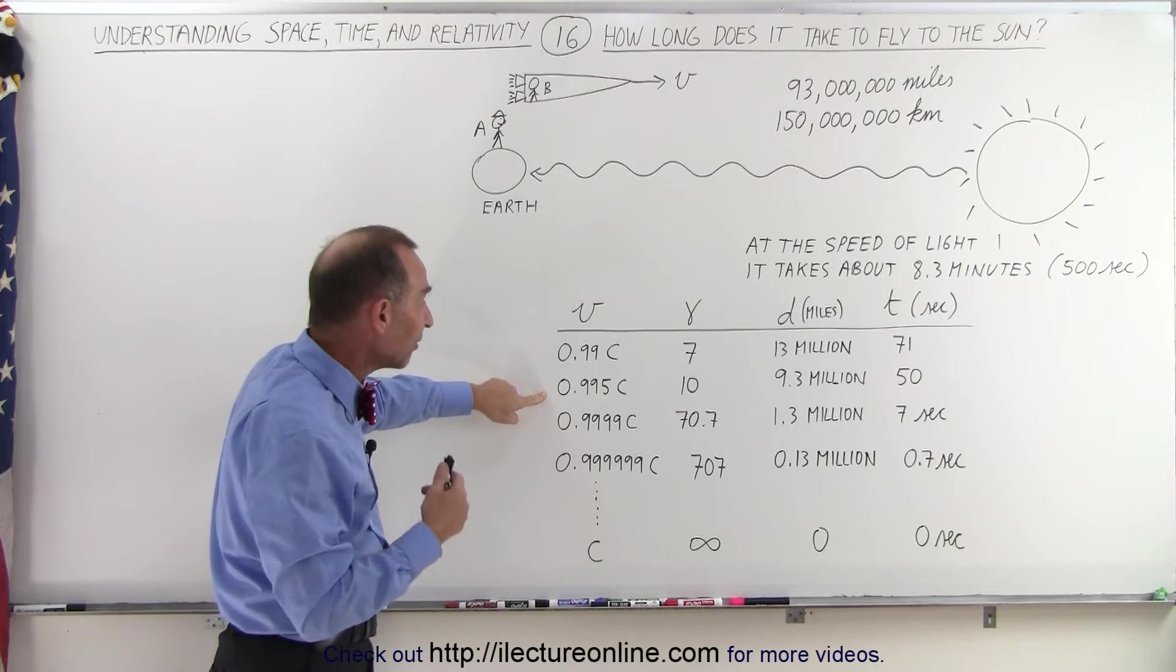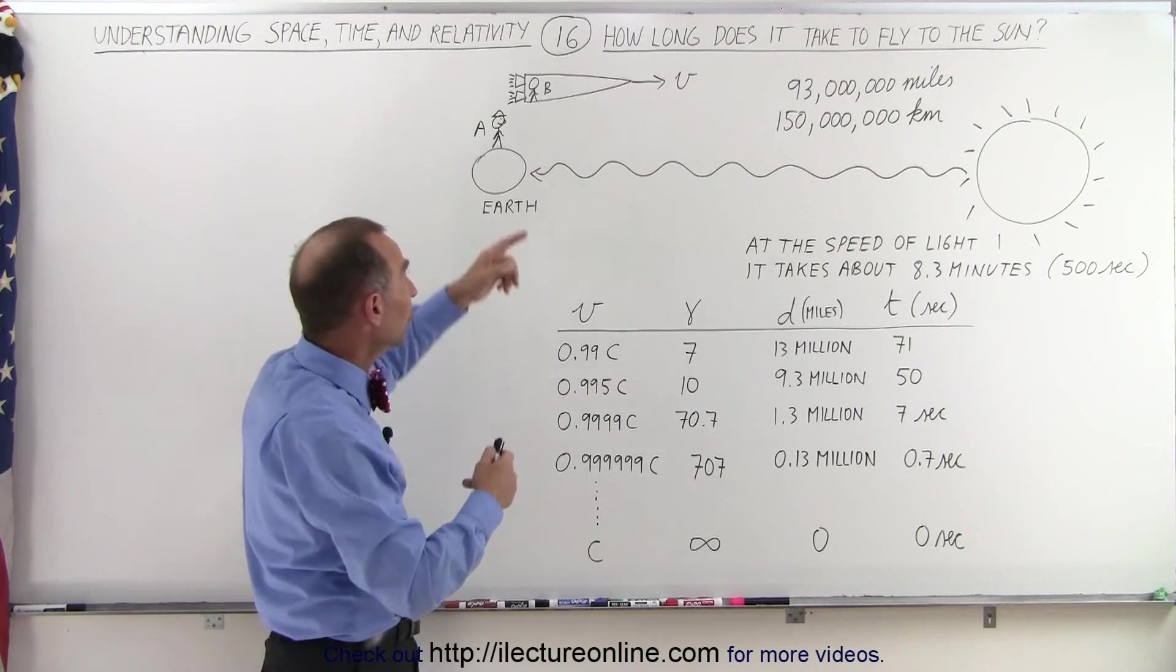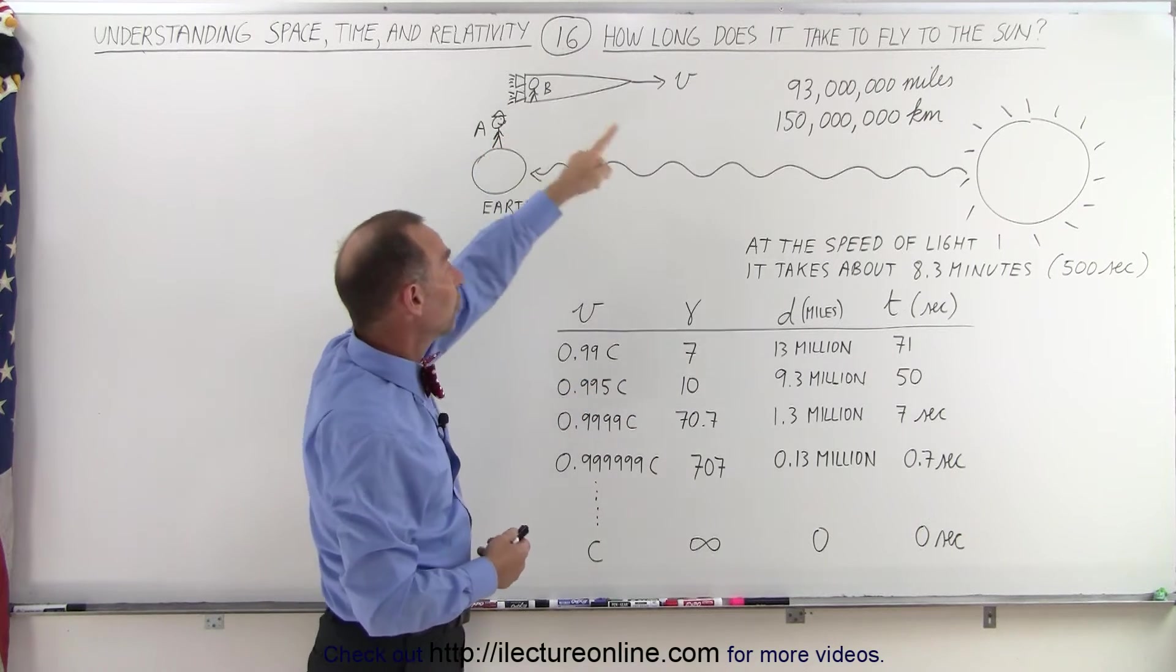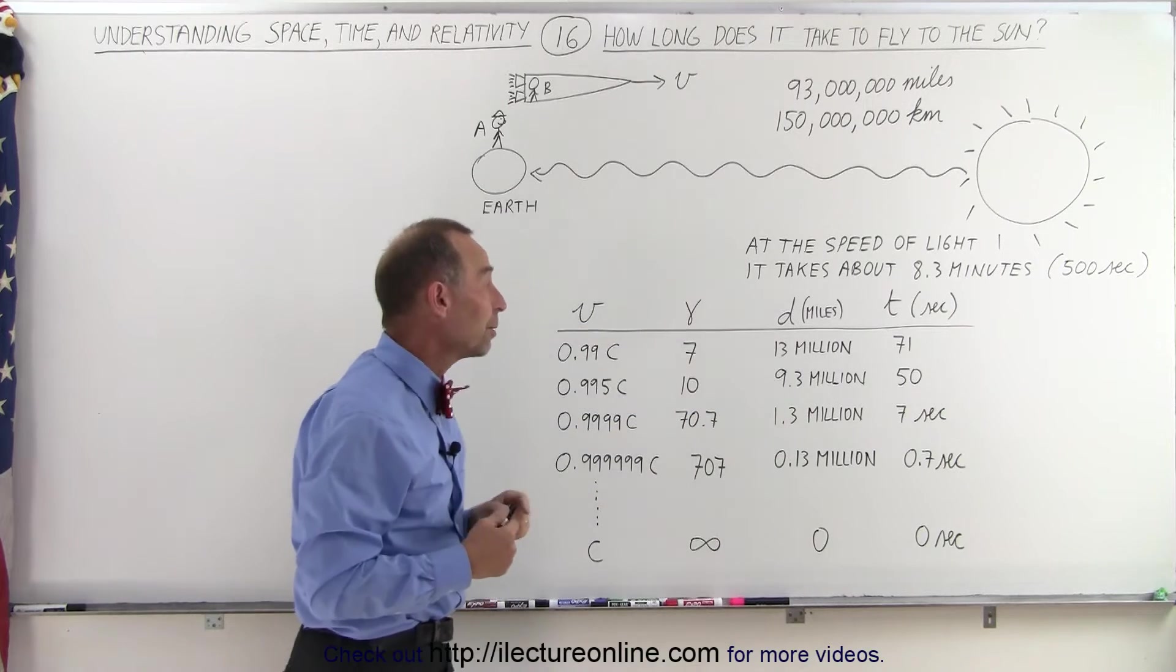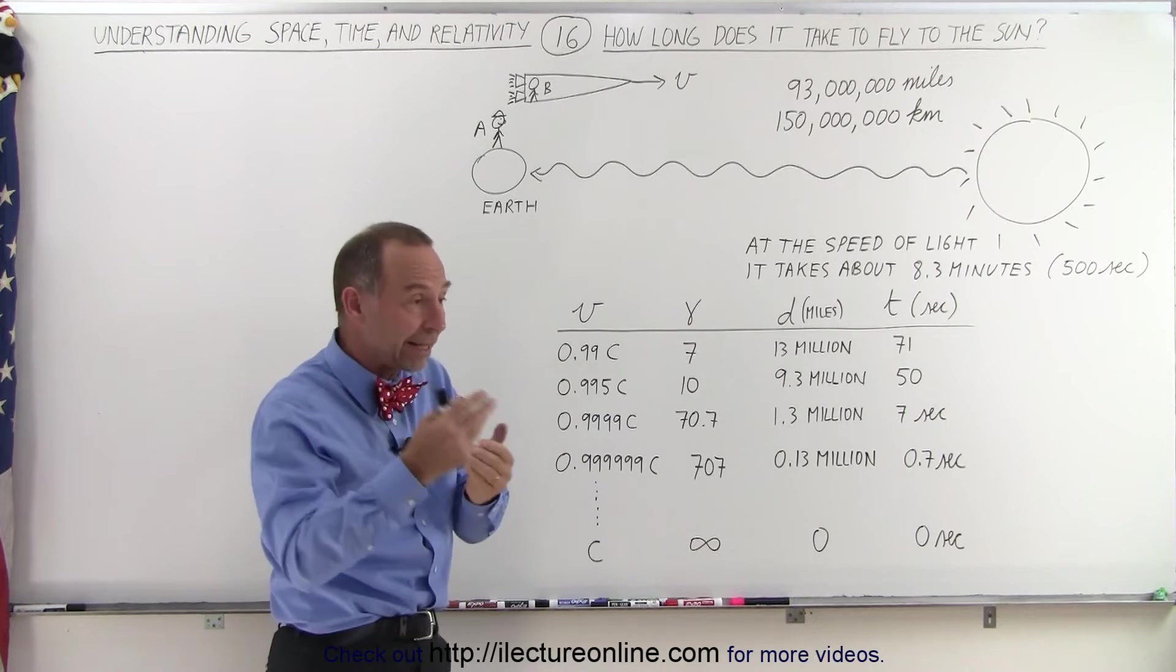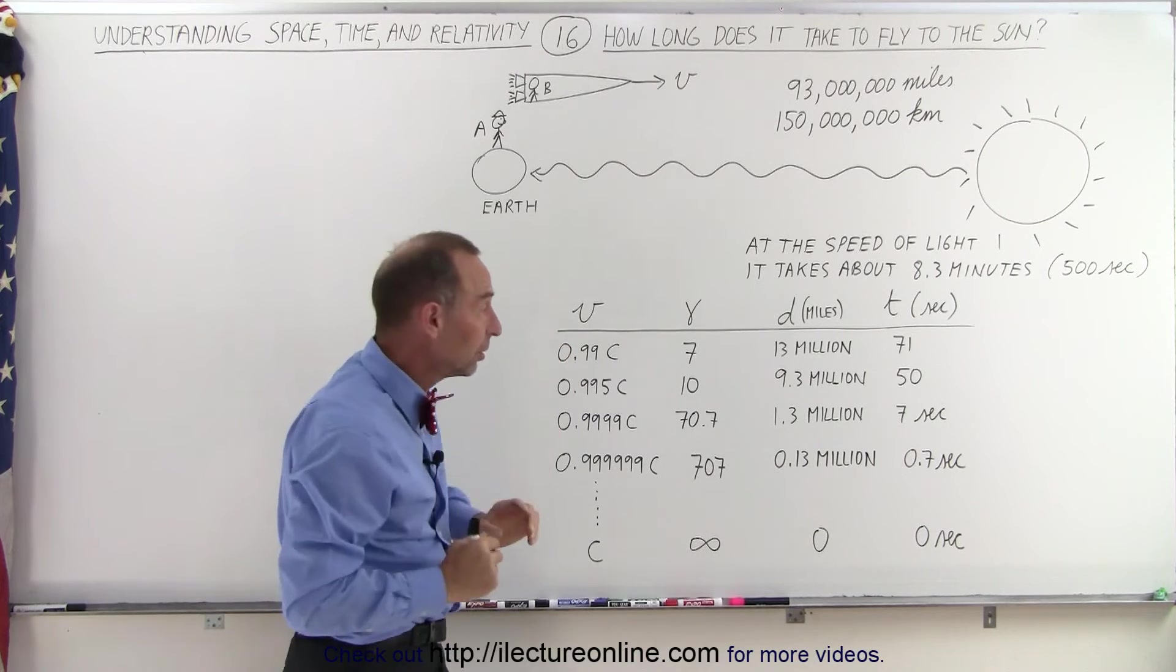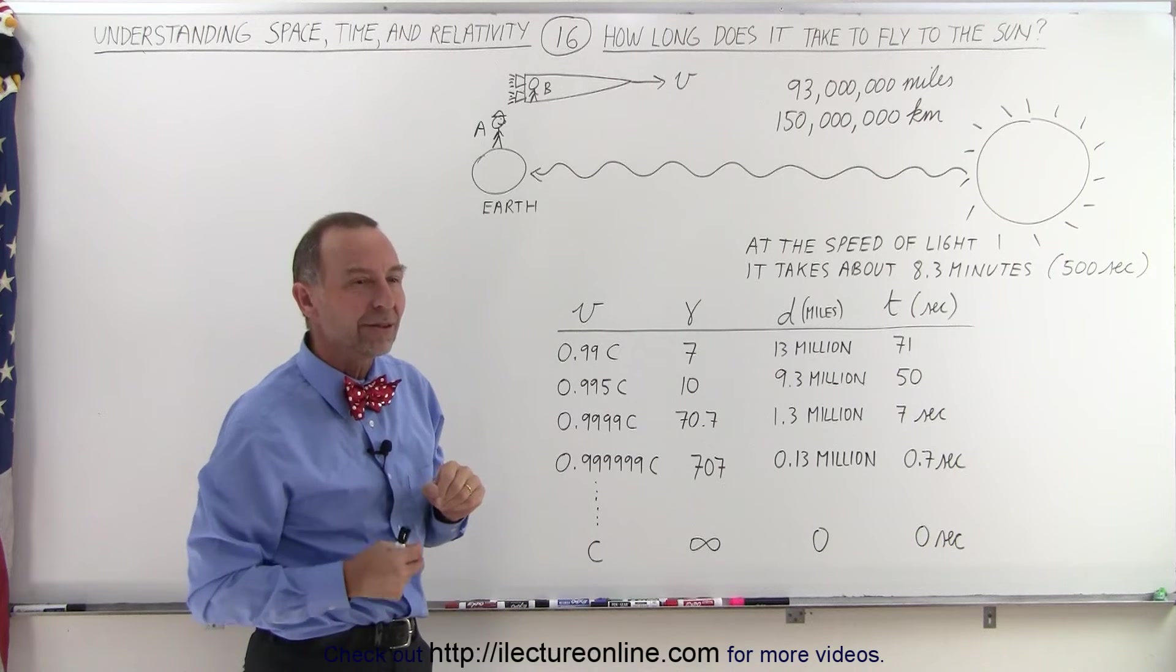If you then speed up to 0.995c, the Lorentz factor now becomes 10. The distance, according to Observer B, to the Sun would now shrink to only 9.3 million instead of 93 million, one-tenth as much. And the time that it would take for Observer B to get there, according to their own clocks, would only be 50 seconds, one-tenth the time.